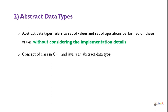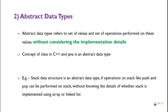Abstract data type refers to a set of values and a set of operations performed on those values without considering the implementation details. The concept of a class in C++ and Java is an abstract data type. For example, stack is an abstract data type — operations like push and pop can be performed on a stack without knowing whether it is implemented using an array or a linked list.